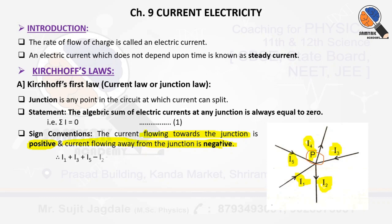We have to apply these sign conventions. Considering the currents traveling towards the junction: I1, I3, and I5. According to sign convention, these three currents are taken as positive. The remaining two currents, I2 and I4, are traveling away, so they are taken as negative. Therefore we can write: I1 + I3 + I5 − I2 − I4 = 0, according to Kirchhoff's current law.